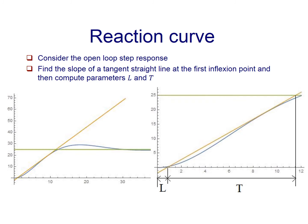So, let us now consider the reaction curve method. First, we have to apply a step input, a unit step input, to the open loop system. Once we have the step response, next thing to do is to find the equation of a straight line which passes through the first inflection point of the response.